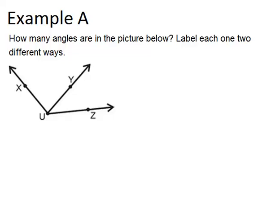In example A, it says how many angles are in the picture below? Label each one two different ways. So, first of all, let's try to find the different angles.